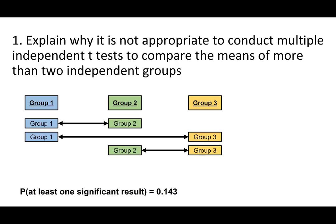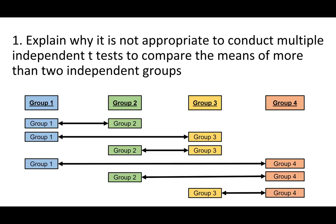That is a high probability of committing a type 1 error. If we had four groups, we would need to do six independent means t-tests. The more groups we have, the more comparisons we need to do, and the greater the chance of making a type 1 error. The overall alpha level would be well over 0.05. With six independent tests, the probability of obtaining at least one significant result, given that the null hypotheses are all true, is really 0.265. In other words, if the population means for these four groups were really all the same, there would still be a 26.5% chance of observing at least one statistically significant result due to a type 1 error.